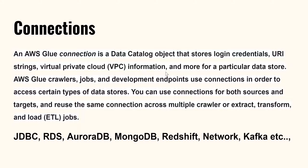The next important thing is connections. An AWS Glue connection stores your login credentials, URI strings, etc. for a particular data store. For example, if you want to connect to Redshift you need to define the endpoint, username, password, and so on so that Glue can connect. The benefit is you don't need to specify these connection parameters each time — you create a connection and reuse it. Glue supports connections to various data stores: JDBC, RDS, Aurora, MongoDB, Redshift, Kafka, and any database sitting inside a VPC.